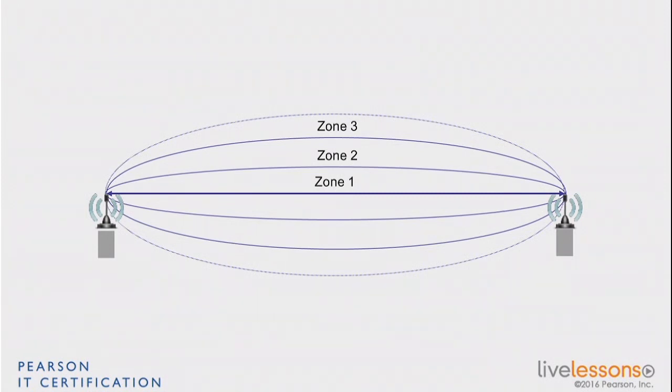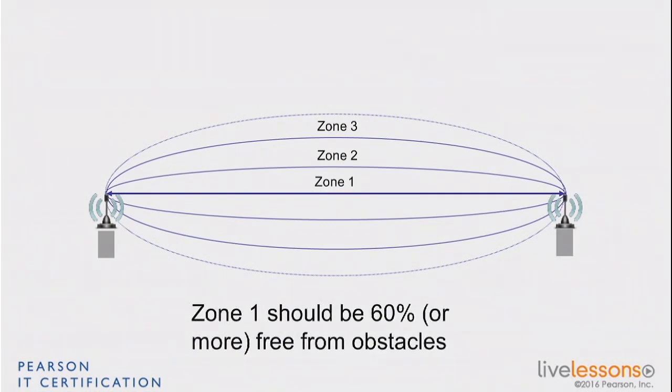But also that this first Fresnel zone is as much as you can free from obstacles. And typically, we say it has to be at least 60% free from obstacles. So that volume should not contain more than 40% of objects that would be absorbing the signal.